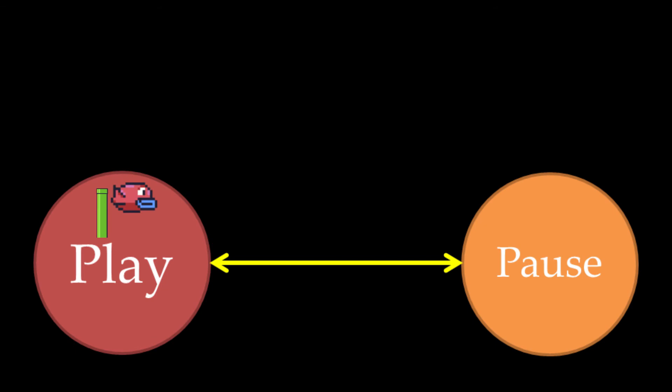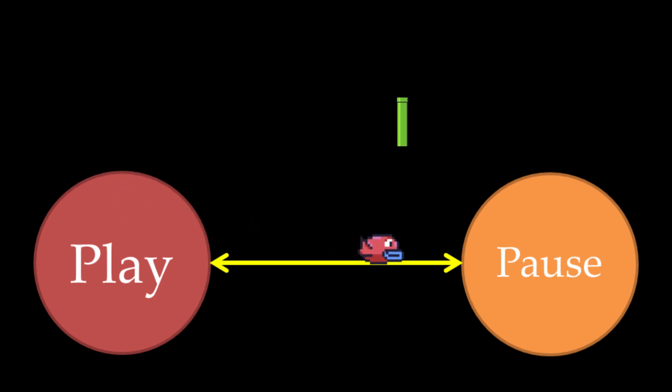The variables from the previous state are introduced as parameters into the new state, so that all of the information like the position of the bird and the pipes can be retained even after the game is unpaused.